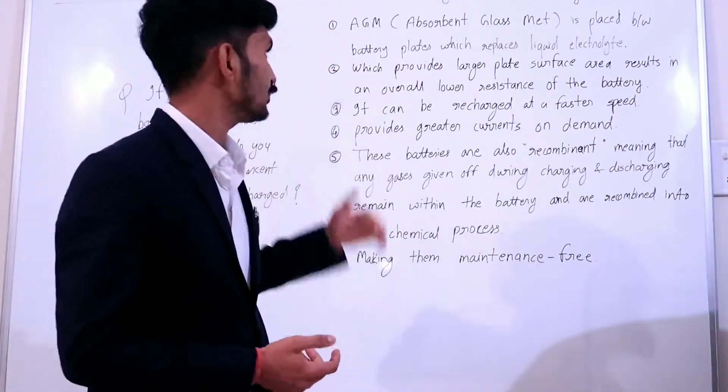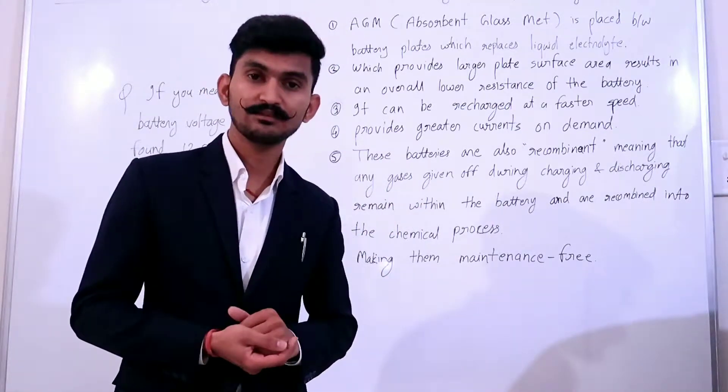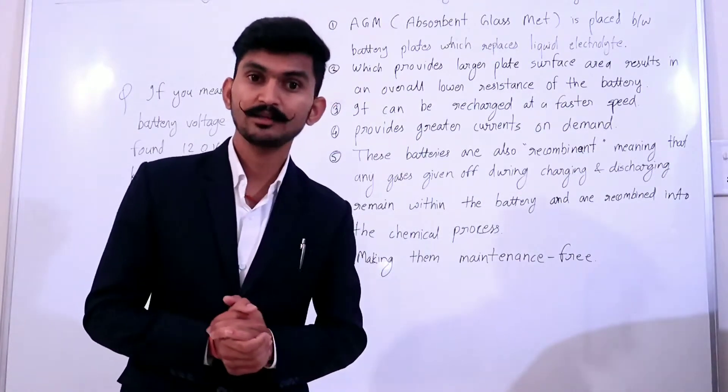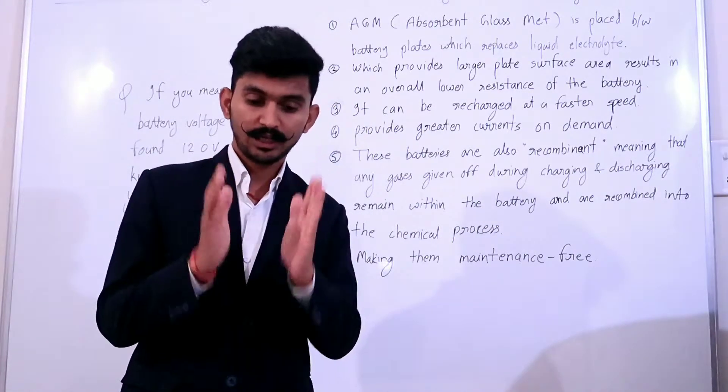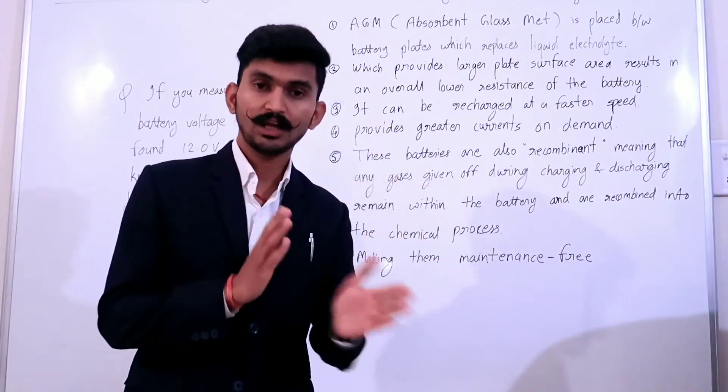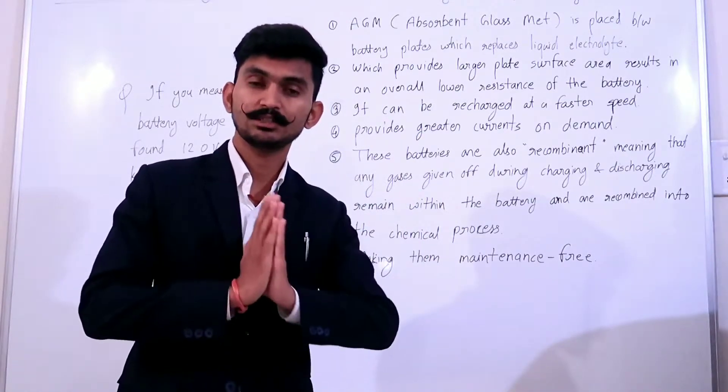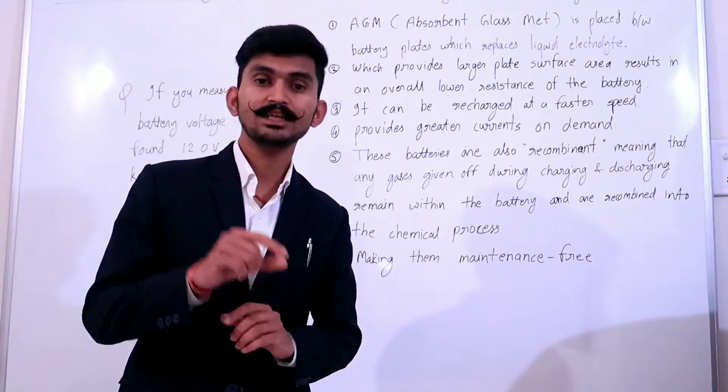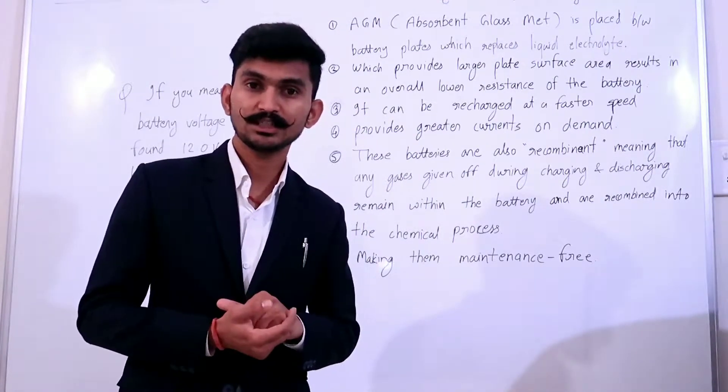So this is the second point, which provides larger plate surface area, which reduces the internal resistance of the battery. What does that mean? When absorbent glass mat is used, it provides larger surface area of the plates, that means your battery's internal resistance is reduced.